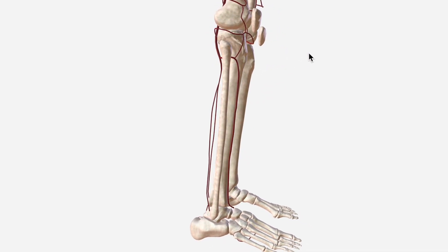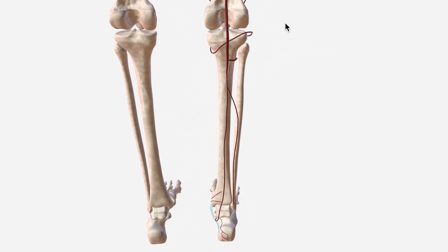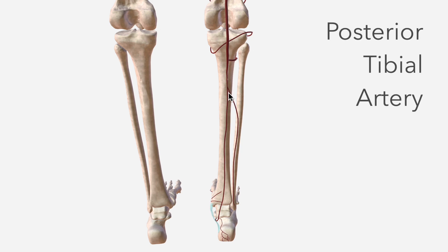We're going to start this video at the back of the knee. After passing behind the knee joint, the popliteal artery splits into two. Anteriorly we can see the anterior tibial artery, and continuing inferiorly is the posterior tibial artery, which continues all the way down the posterior aspect of the tibia, supplying the posterior leg along the way.